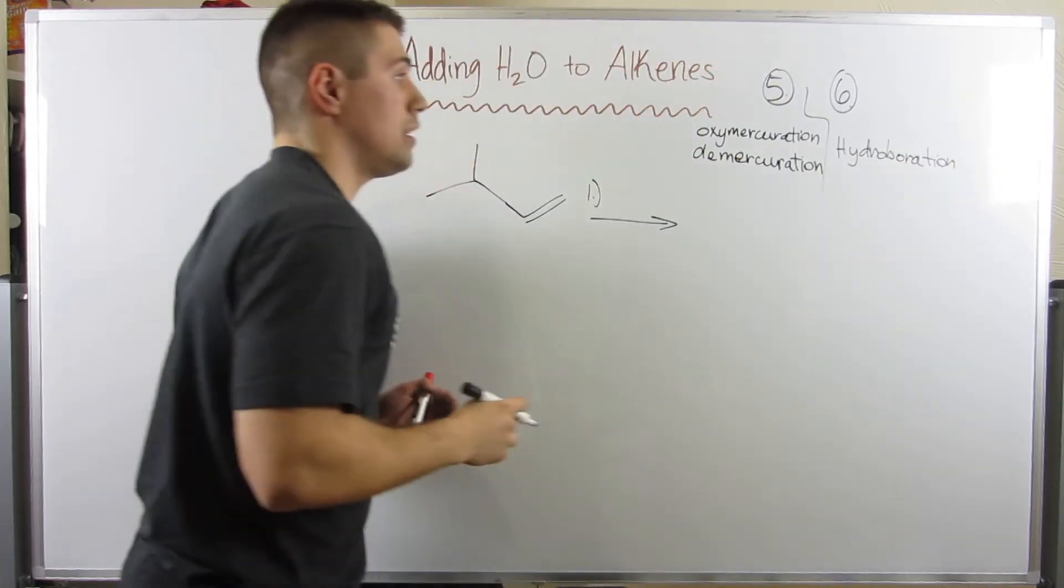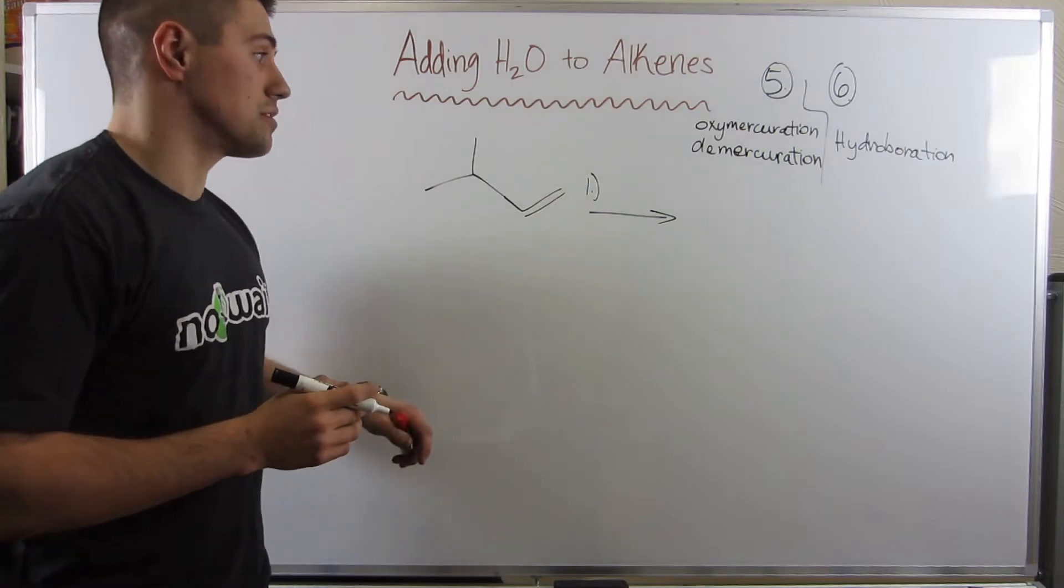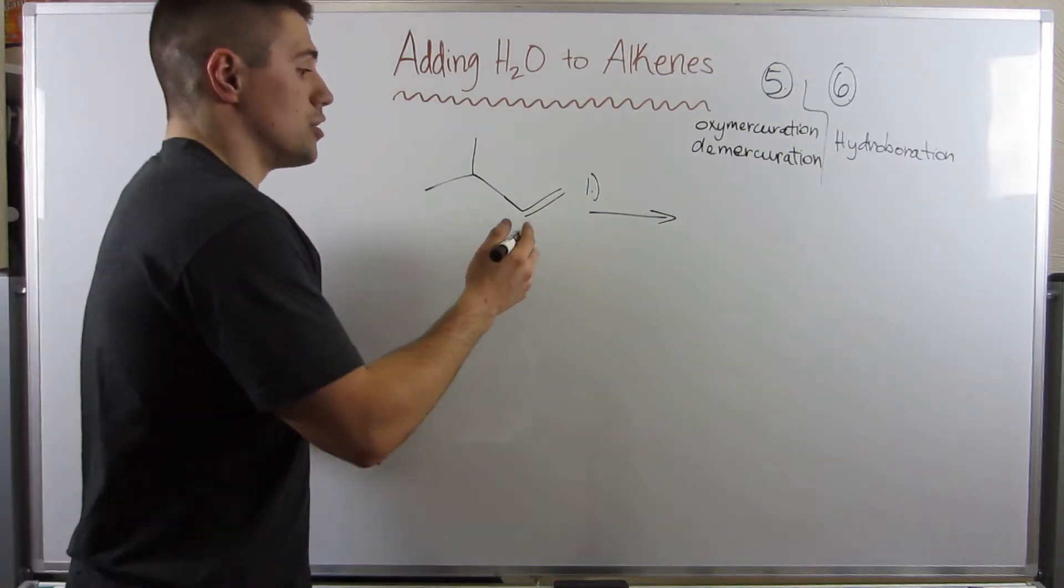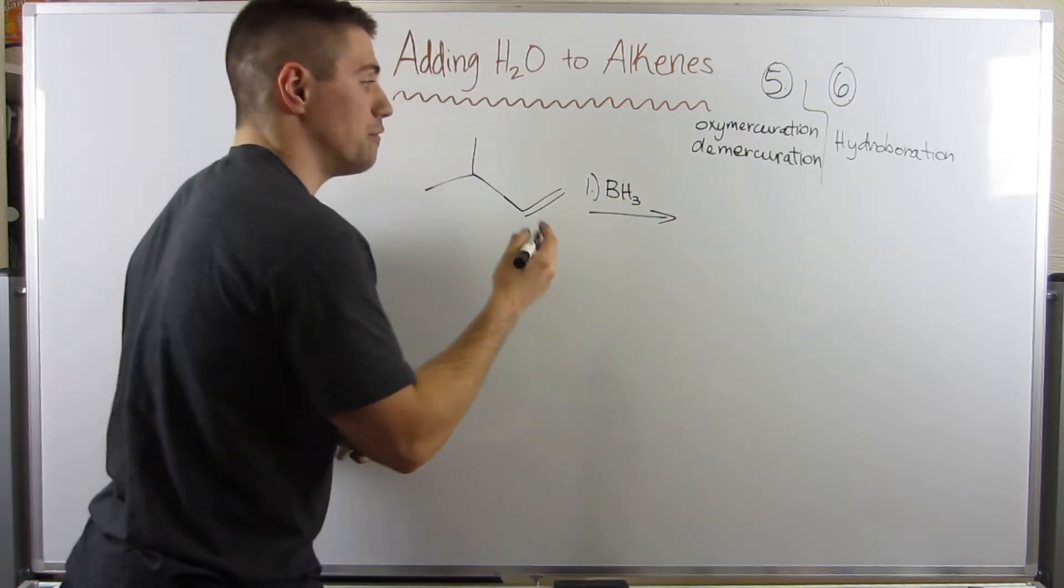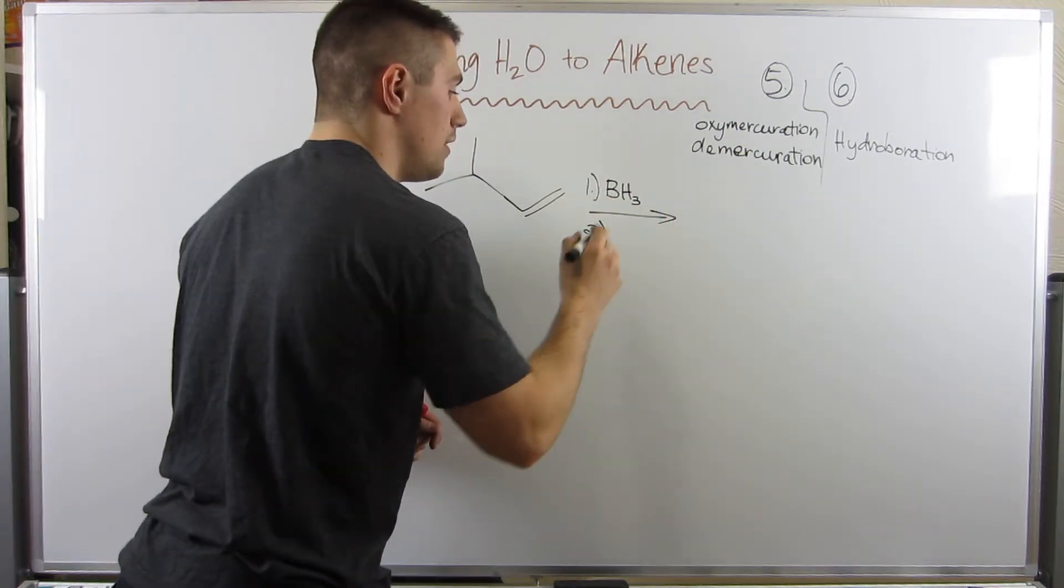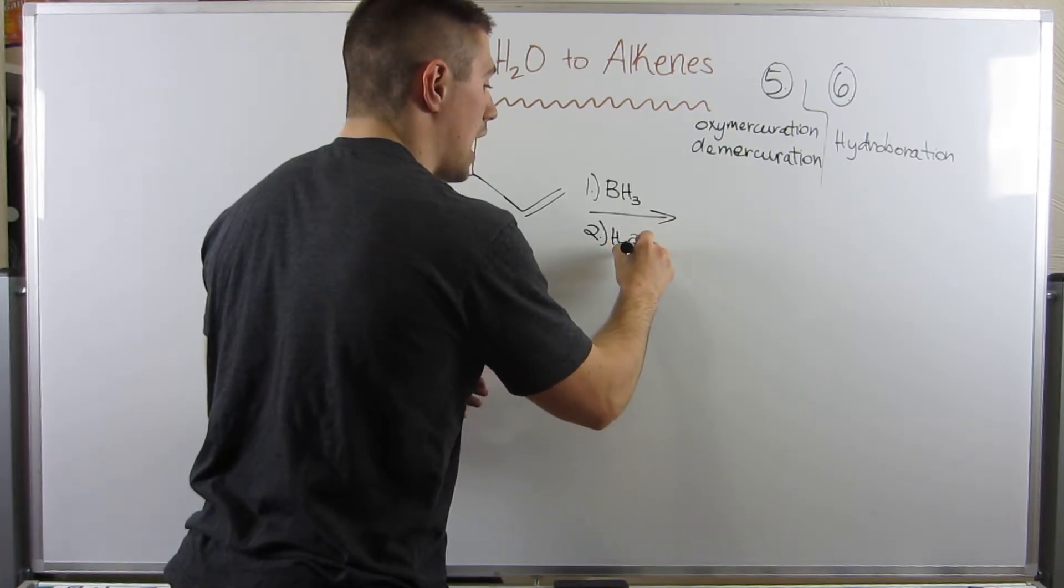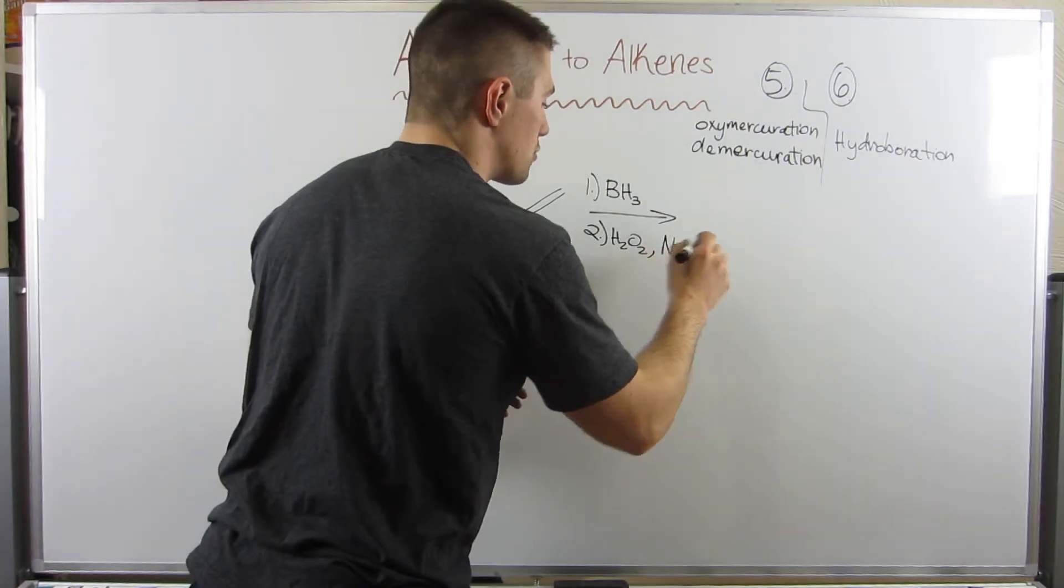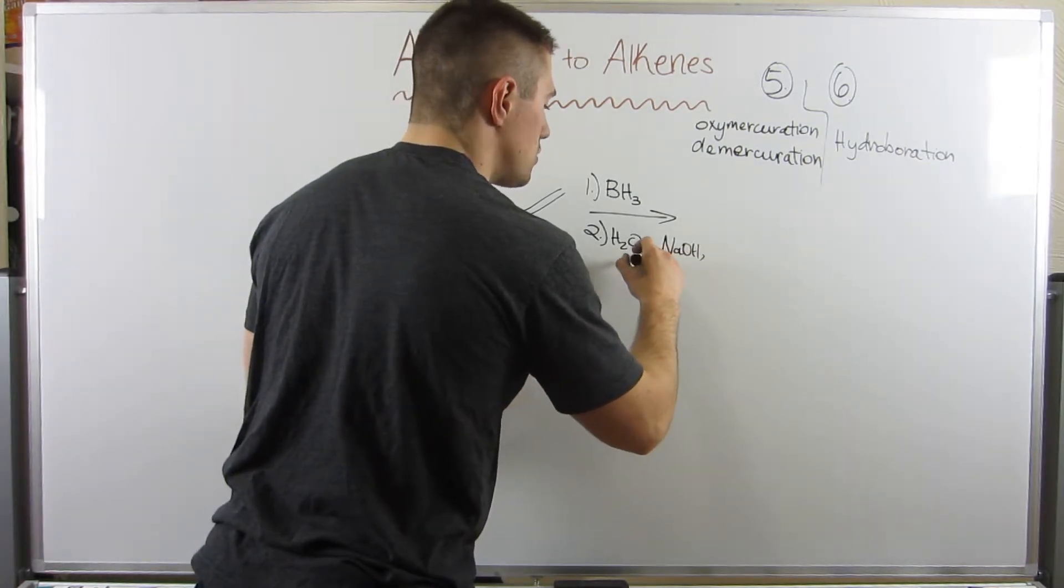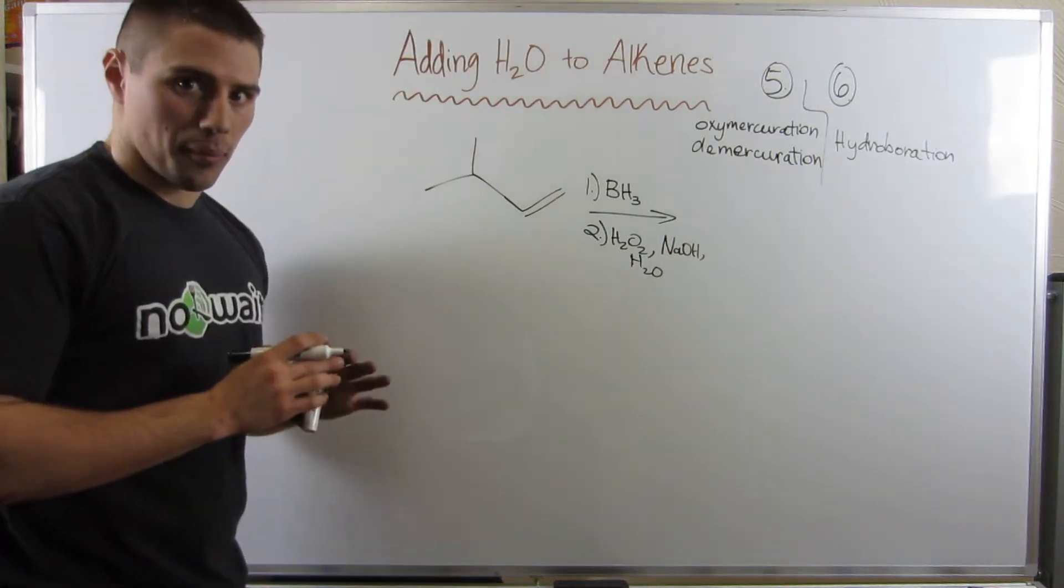However, if we wanted to do reaction 6, reaction 6 is called hydroboration. And this gives us an alcohol in the least substituted position. And here are the reagents. Let me look at my cheat sheet. So, if you treat some alkene with a first step of BH3, and then you also toss in some H2O2, hydrogen peroxide, as well as some NaOH, some hydroxide, and a little bit of water.